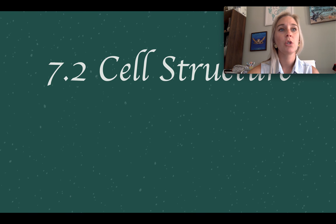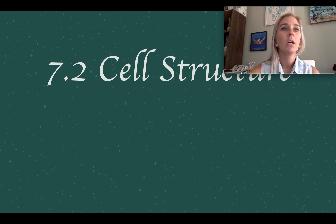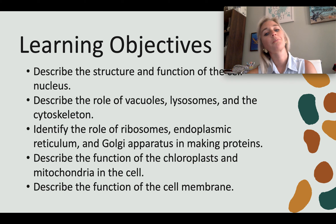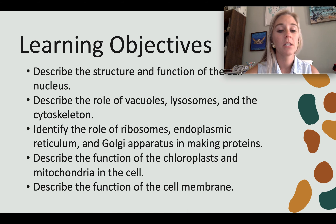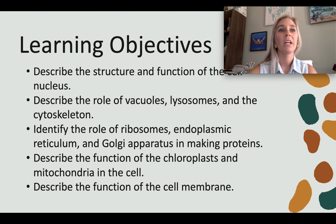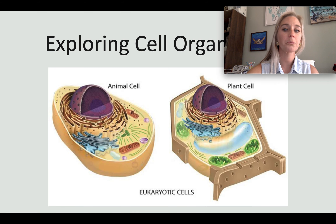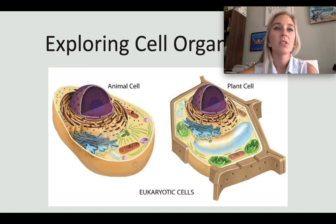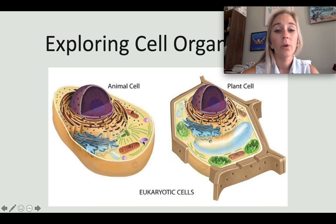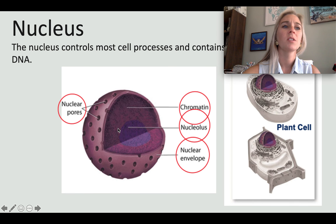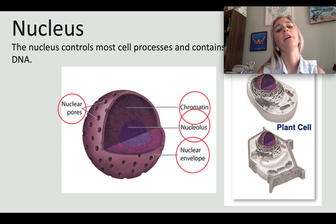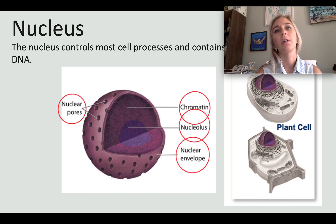Now we move into cell structure, focusing on the more specialized eukaryotic cells. You need to remember the roles of the different organelles — how they work and function. These are representations of plant and animal cells that we'll look at throughout the unit. All eukaryotes have a nucleus, which contains nearly all of the cell's DNA and the coded instructions for making proteins and other important molecules.